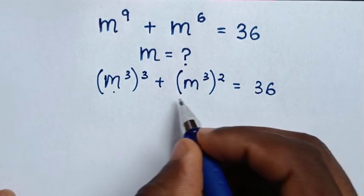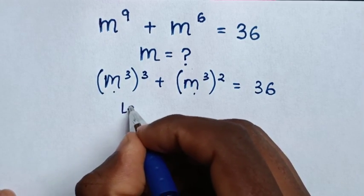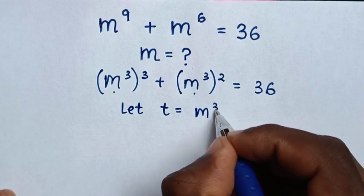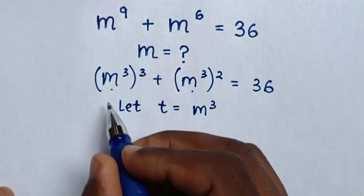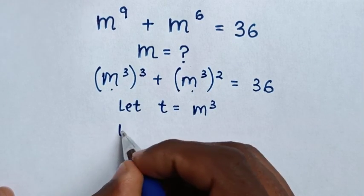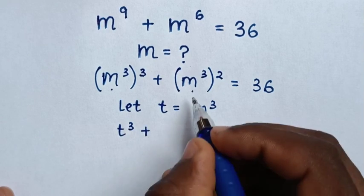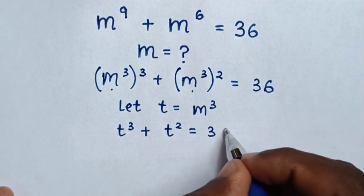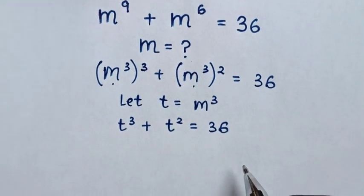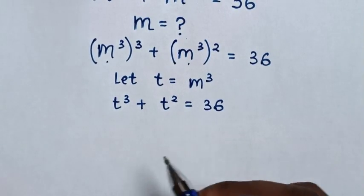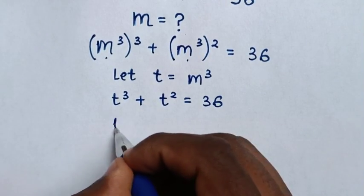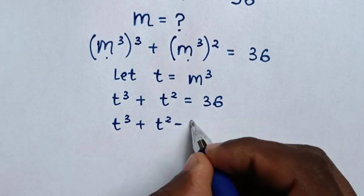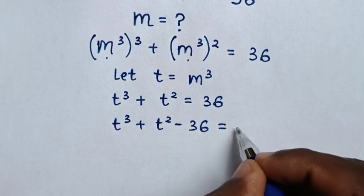In the next step, m power 3 is common, so we will let t is equal to m power 3. So in here it will be t power 3 plus t power 2 is equal to 36. Then we will take 36 to the left side, so it will be t power 3 plus t square minus 36 is equal to 0.